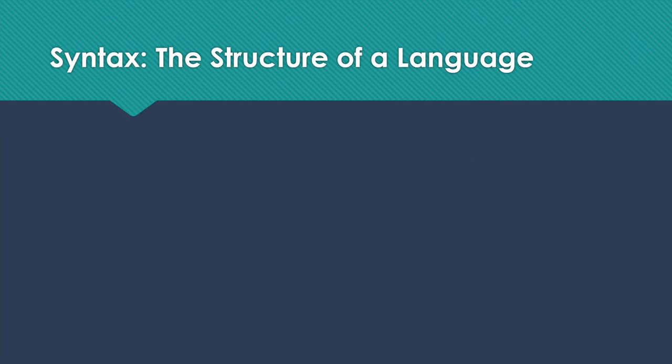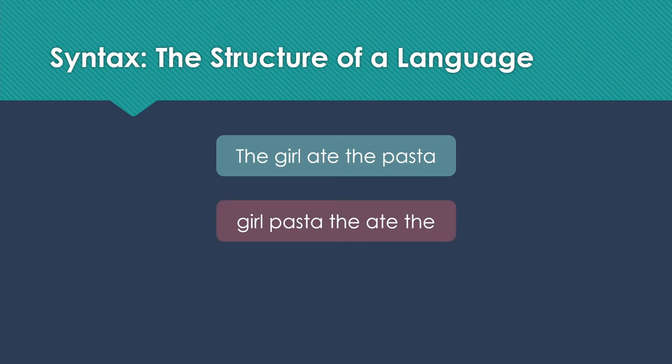First of all, syntax. The syntax of a language, whether a natural language or a programming language, is simply the structure of the language. Let me give you a few English examples. Here I have a simple sentence: the girl ate the pasta. This is a correct sentence with correct structure. Then I have something with the same words in it, but 'girl pasta the ate the' is not syntactically correct.